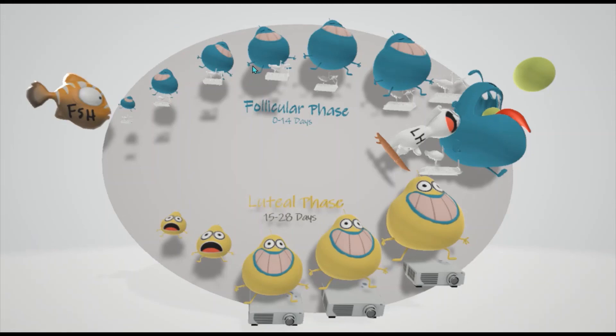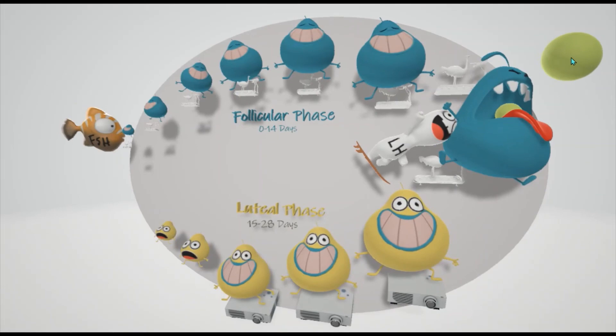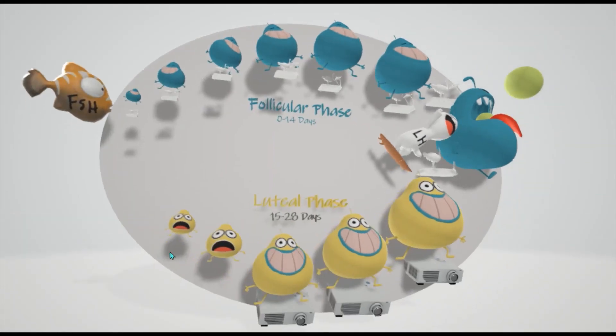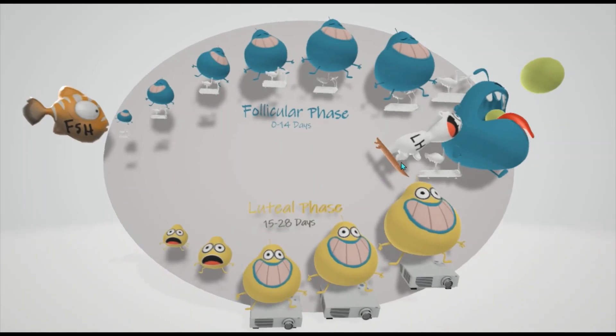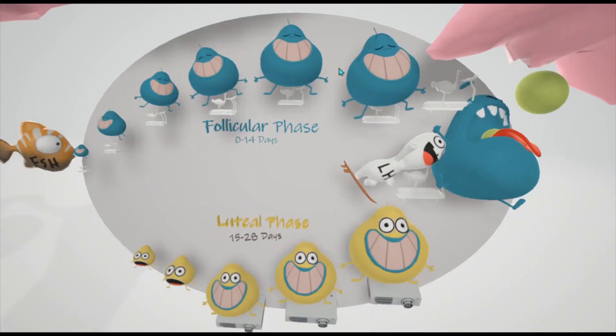That's basically it for the menstrual cycle. We have the follicular phase, which is 0 to 14 days, and there's ovulation on day 15. Then there's the luteal phase. In a different video, we'll discuss what happens in pregnancy. In pregnancy, the corpus luteum is protected, so it can continue making progesterone.